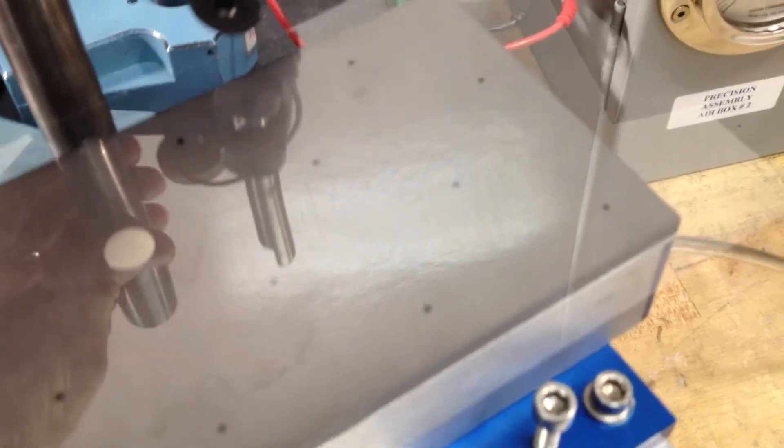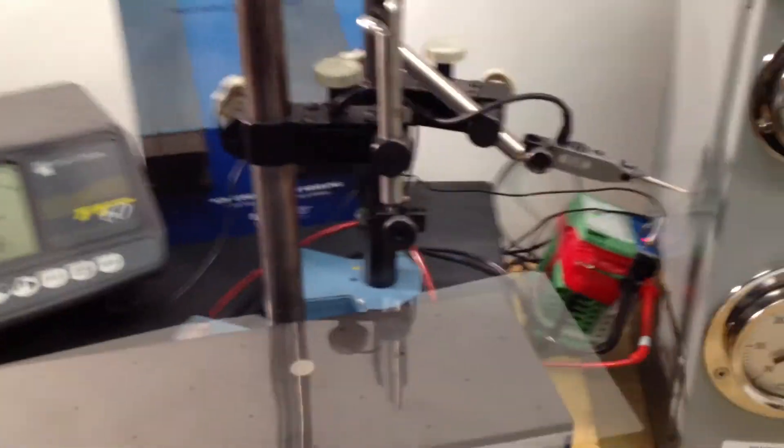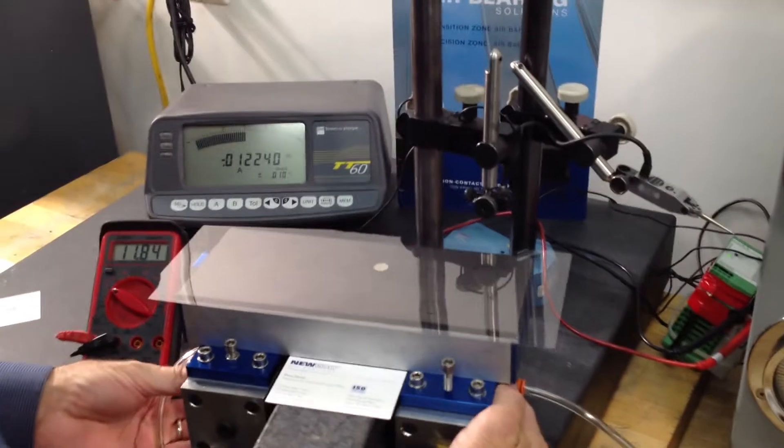I'm going to push the eddy current probe off. You can see that the vacuum pressure is about 4 inches of water. I'm going to hand the phone off to Jim, pick up the demo unit.